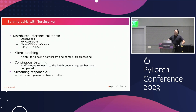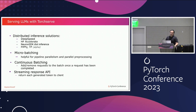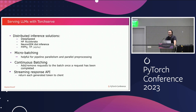Let's move to TorchServe and see what we are supporting today. For distributed inference, we have integrations with DeepSpeed, Hugging Face Accelerate, Neuron SDK distributed inference for AWS custom silicon, and PP and TP from PyTorch native APIs in alpha state. We also have micro batching, continuous batching, and the streaming response APIs that Matthias, Lee, and AWS worked on.